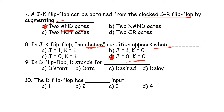JK flip-flop is a memory storage data device. In D flip-flop, D stands for Data — option B is the correct answer.